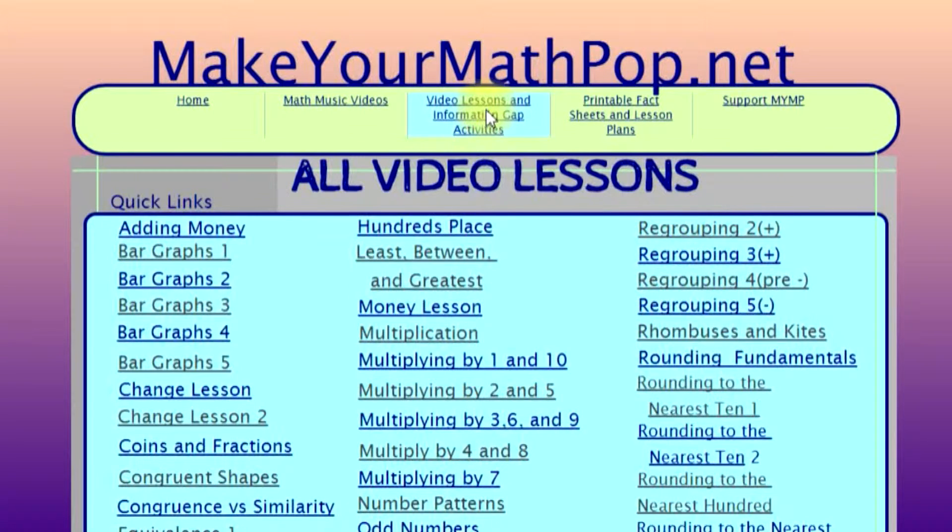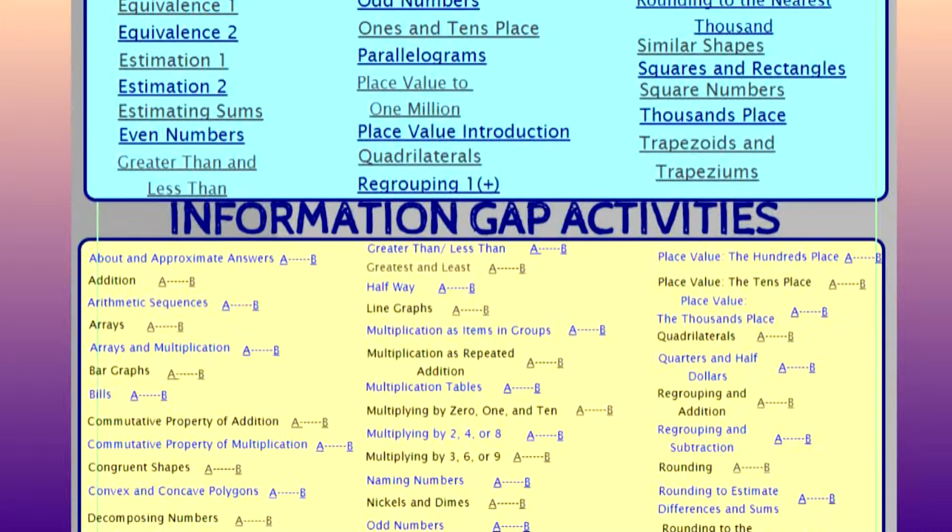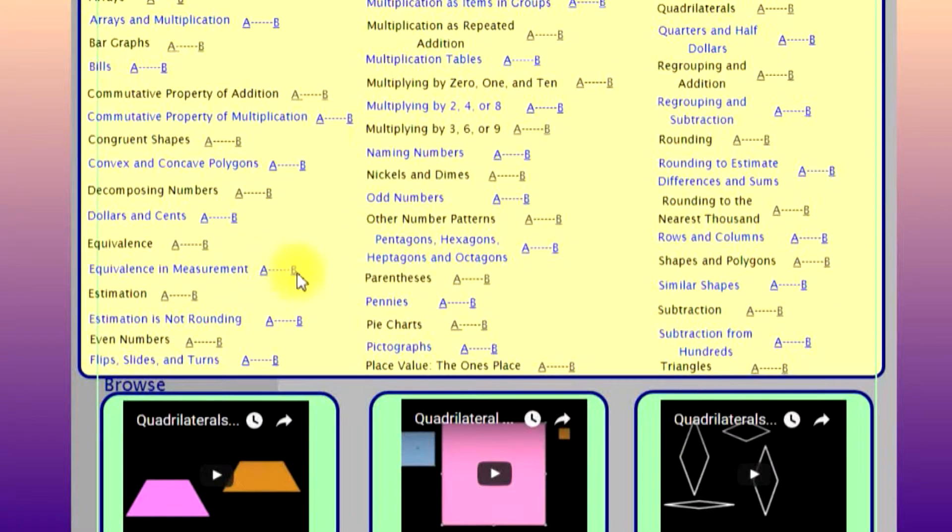Moving on to math video lessons and information gap activities, once again, all video lessons are indexed in alphabetical order. This page also has information gap activities, which will be described in another video housed on this page. Information gap activities require two separate downloads, an A version and a B version, and is intended for partner work primarily, or small group.